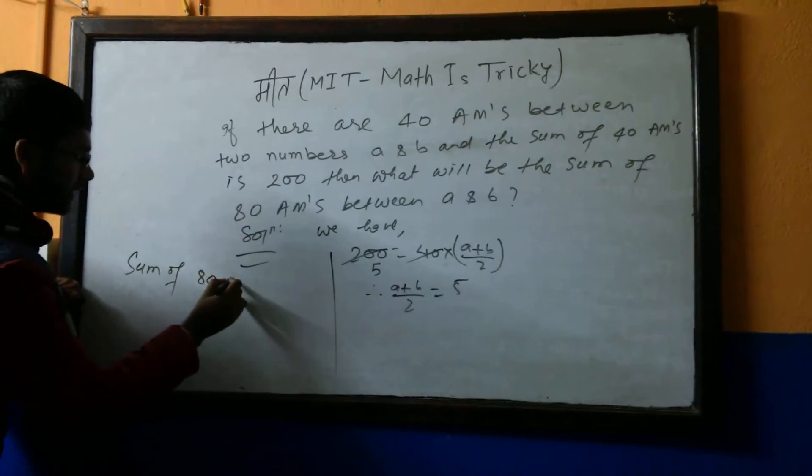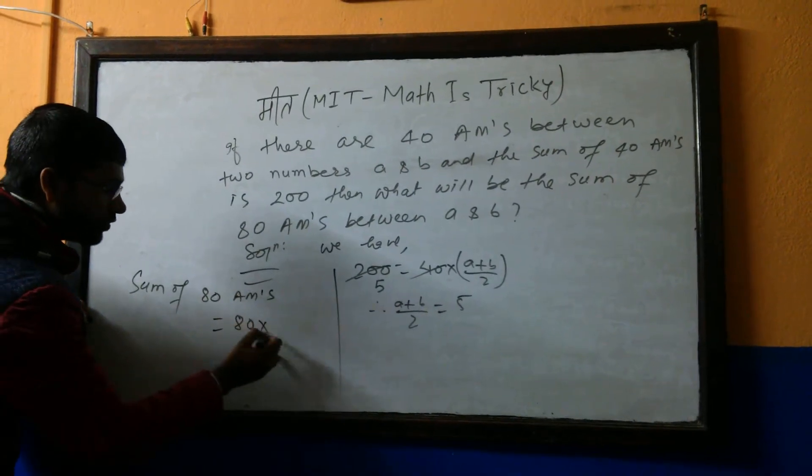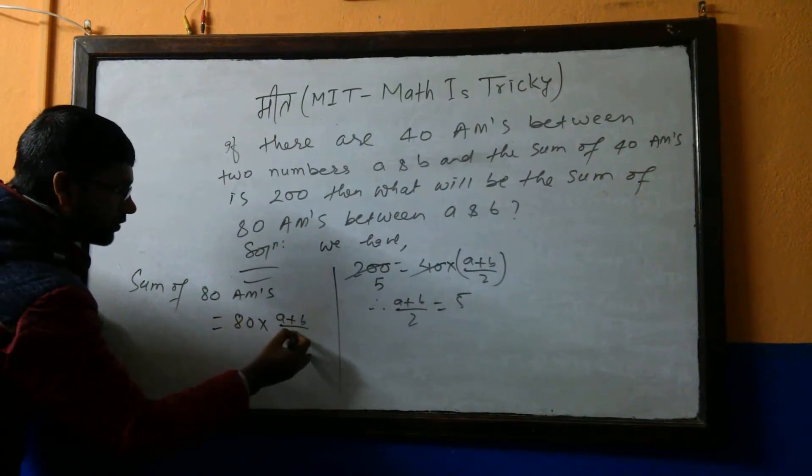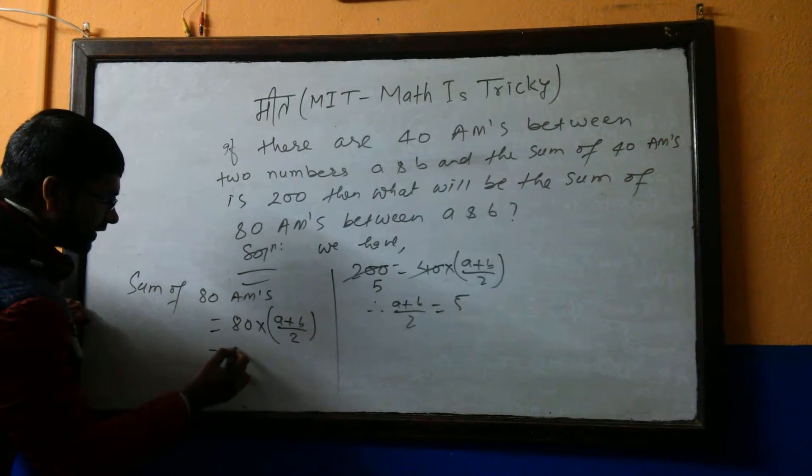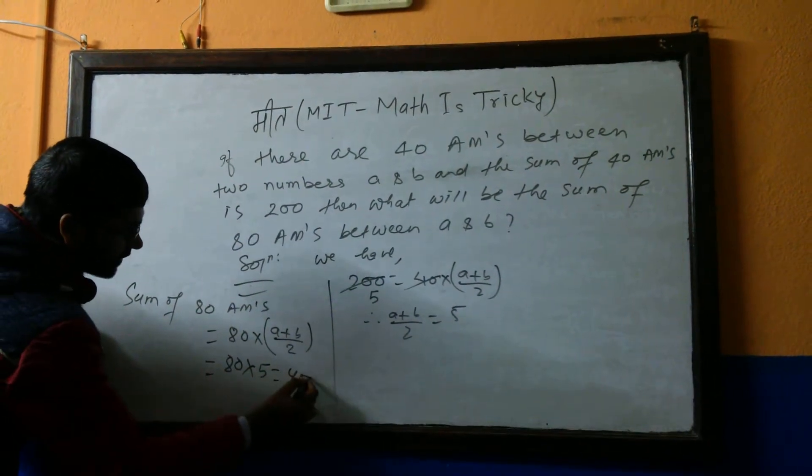And we know that sum of 80 AMs will be 80 into (a + b) by 2. That's simply 80 into 5, so it will be 400.